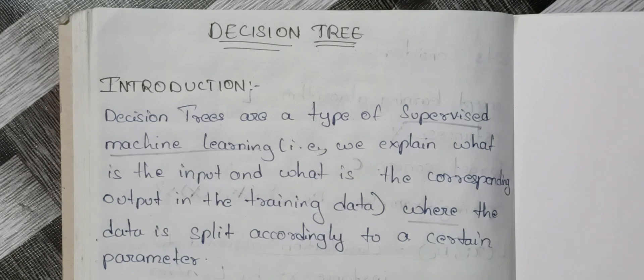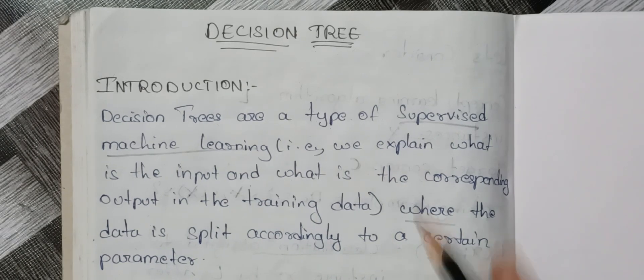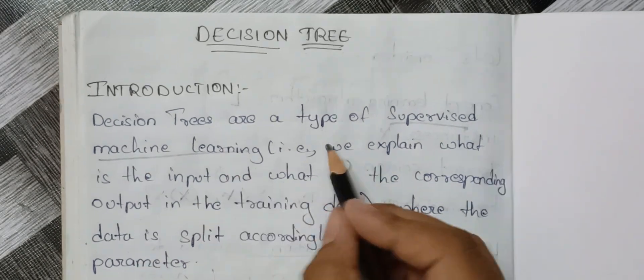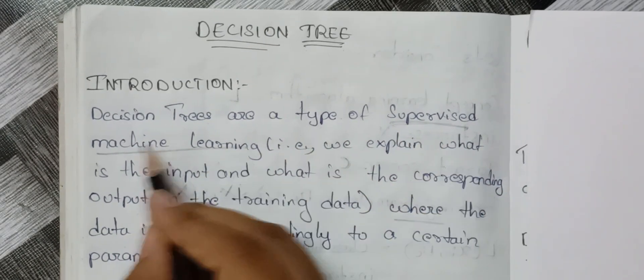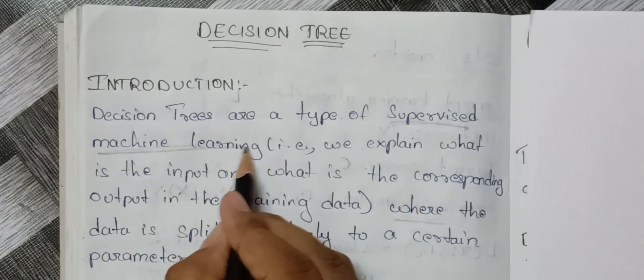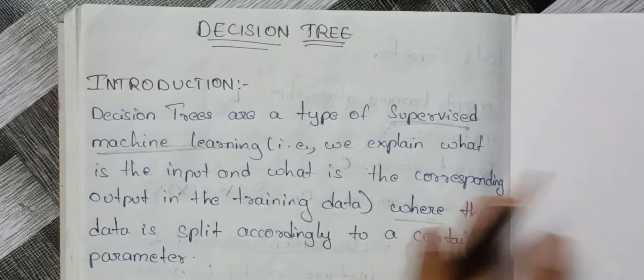Let's start. So the topic is the decision tree. Decision trees are a type of supervised machine learning. What is supervised machine learning?